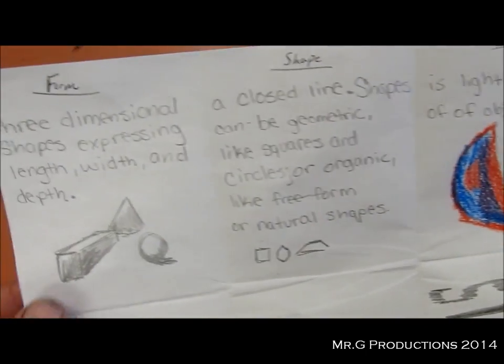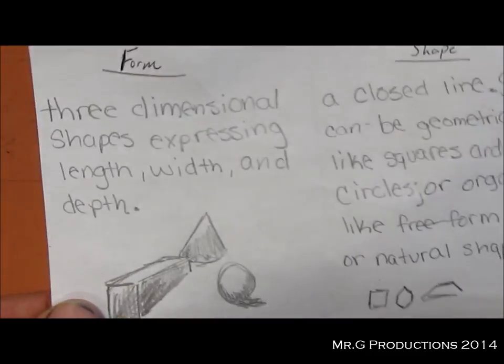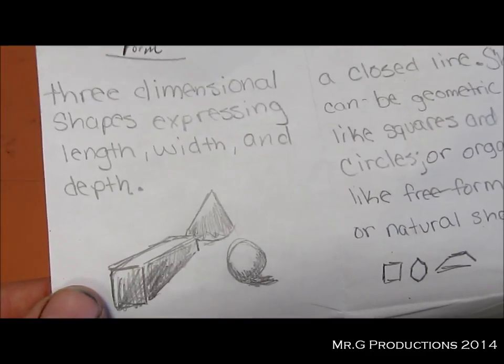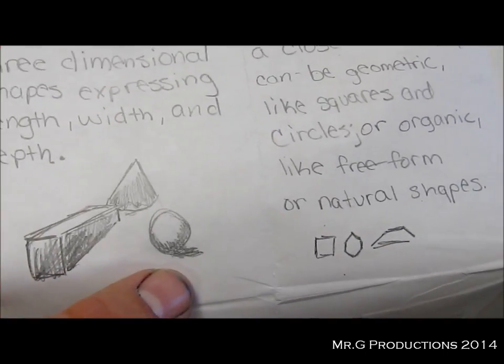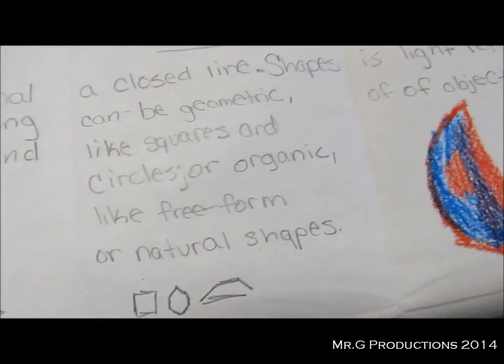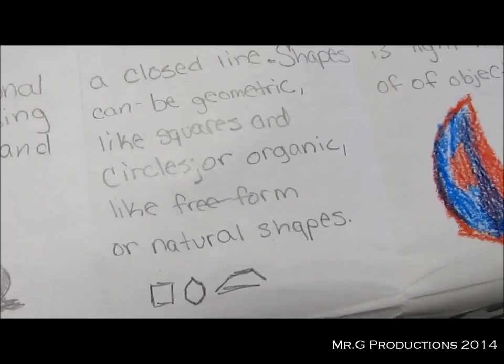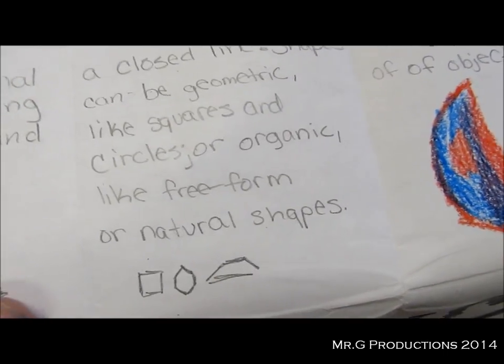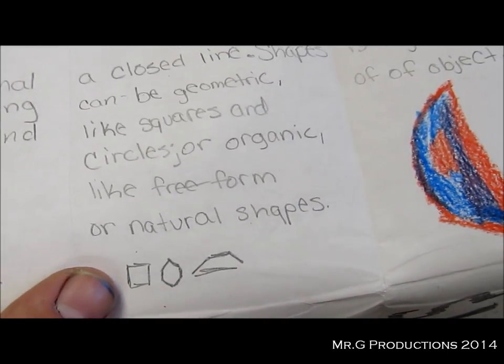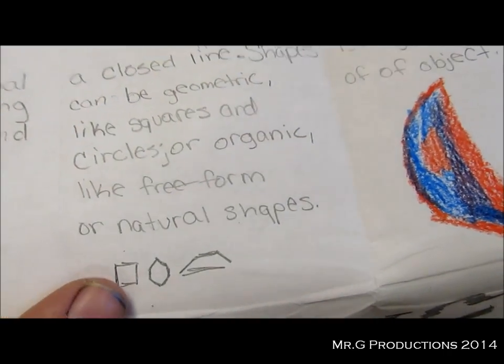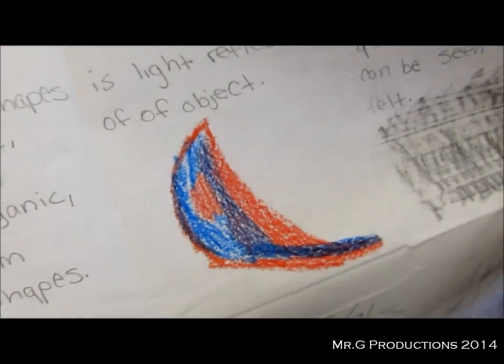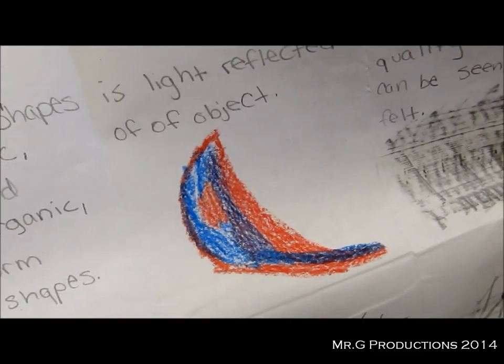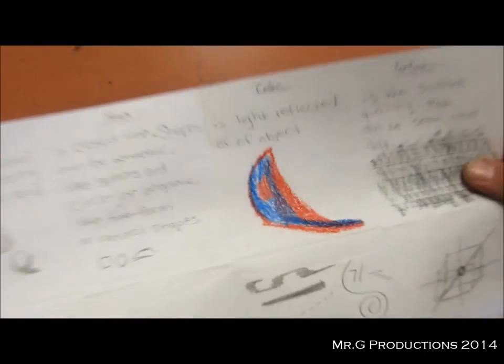All right, so on the other side, doing the same thing with the elements of art. So form, three-dimensional shapes expressing length, width, and depth. Got a couple shapes lying down, did some shadowing around them. Space, or sorry, shapes are 2D objects. So illustrating geometric shapes, circles, organic shapes, free-form objects, natural shapes. And then color, light reflected off of an object. So I drew just a real quick sketch or something and put some color on it.